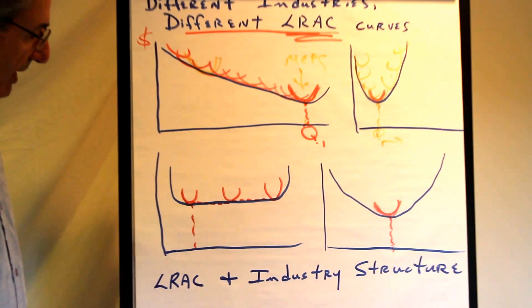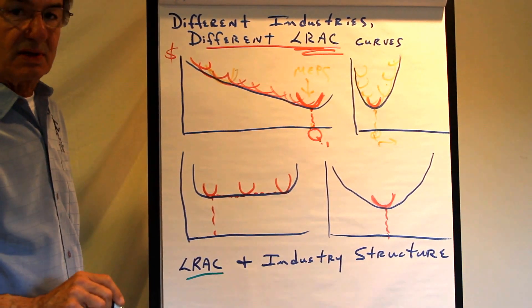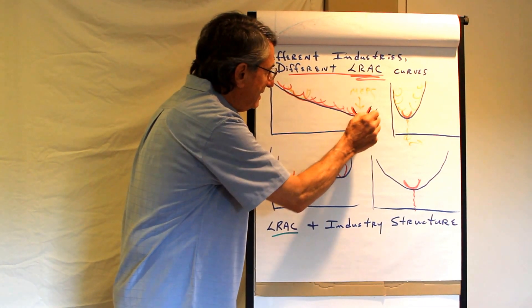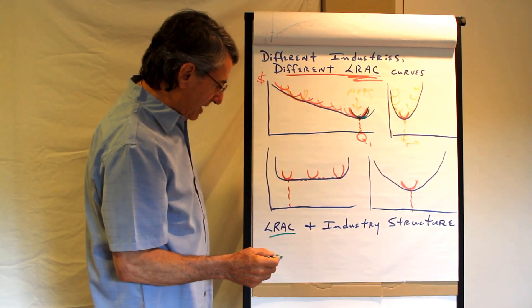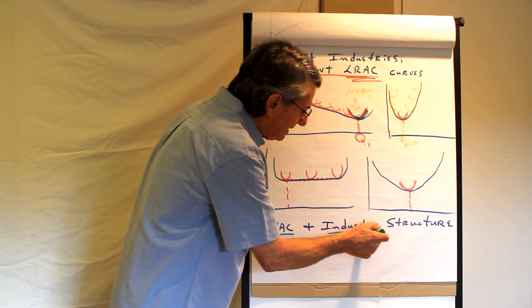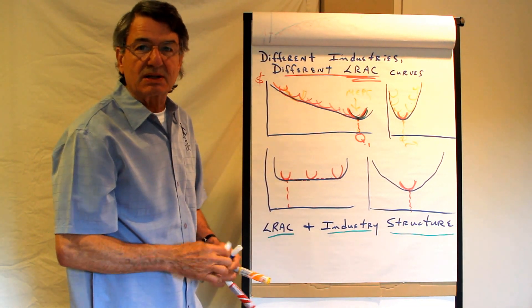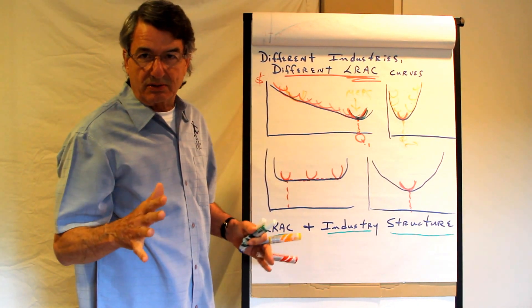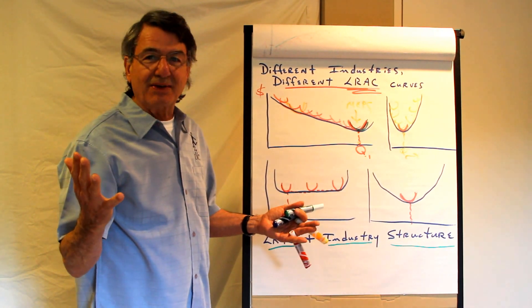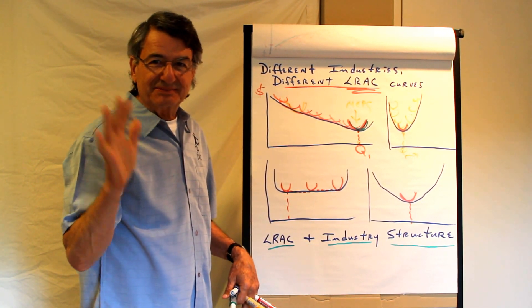So the point is that the long-run average cost has to do with economies and diseconomies of scale. That has to do with the technologies that exist for producing that product. And because of these differences in technology and long-run average cost curves it leads to different industries that have different competitive structures. So that's it. Costs in the long run. Hasta la vista.